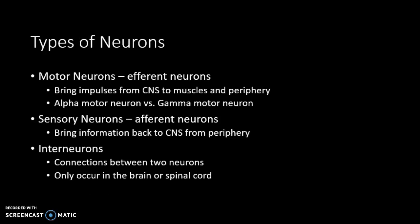We have different types of neurons. Motor neurons are efferent neurons that bring impulses from the CNS to muscles in the periphery. Alpha motor neurons innervate muscle fibers and initiate contraction, while gamma motor neurons innervate muscle spindles. Sensory neurons are afferent neurons that bring information back to the CNS. Interneurons connect two neurons and only occur in the brain and spinal cord.